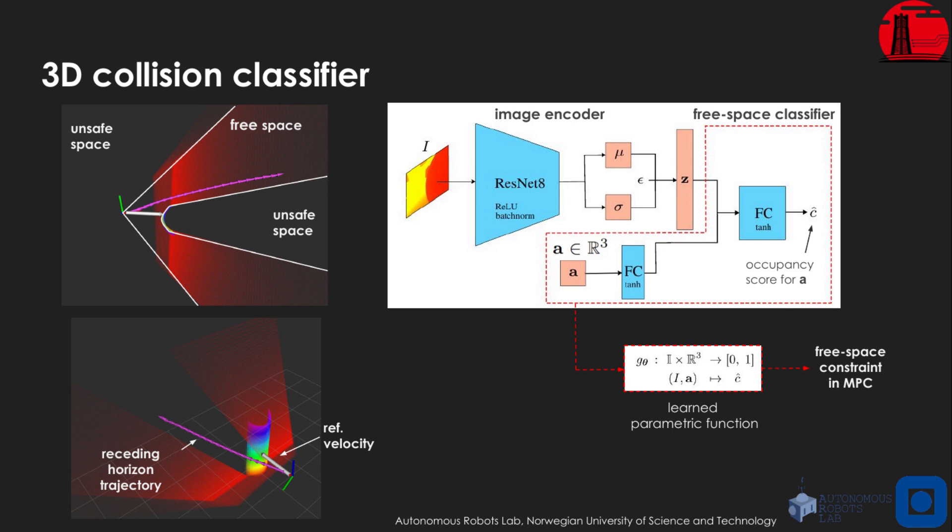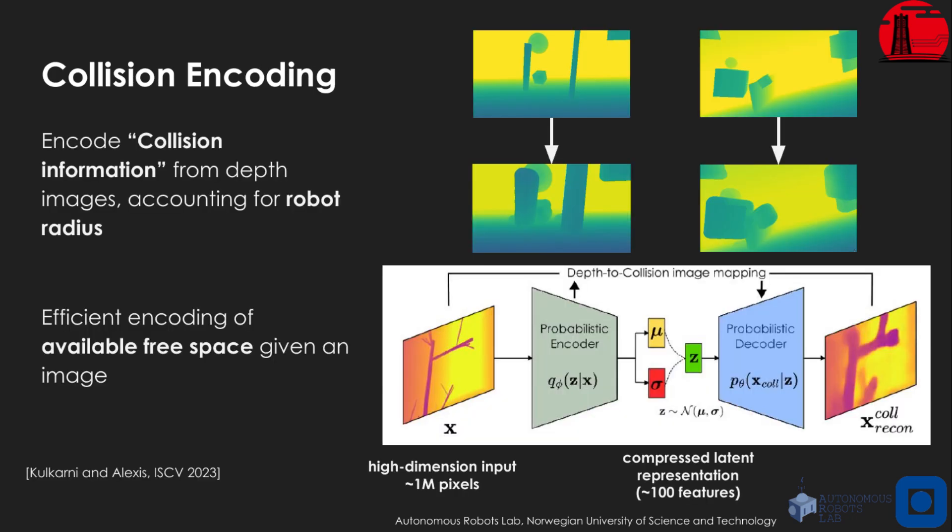However, instead of using directly the high dimension input depth image as input to our system, we first proceed to an encoding into a low dimensional latent representation through a convolutional neural network. For this encoding, we make use of previous work which encoded not only the pixel-wise depth information of the neural depth image, but also the robot-owned geometry. This results in reconstructing images inflated by the size of the robot. We make use of the same depth collision mapping to efficiently encode all of the available free space given a depth image.